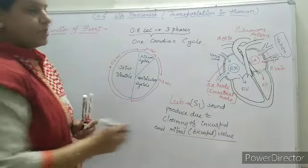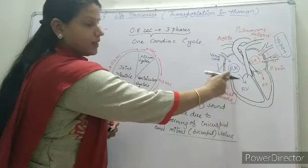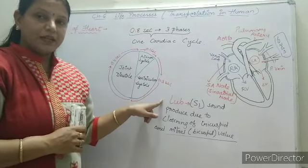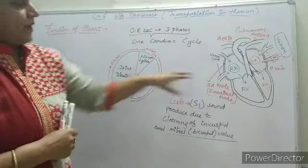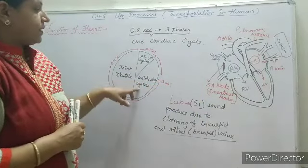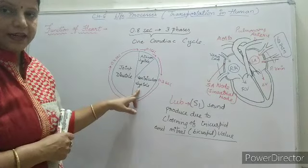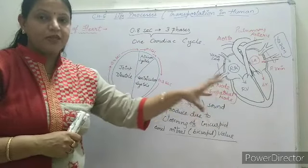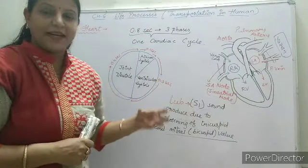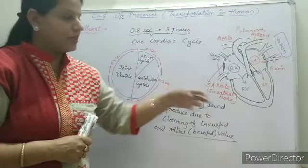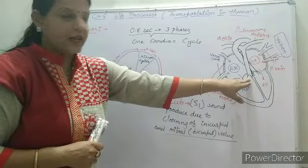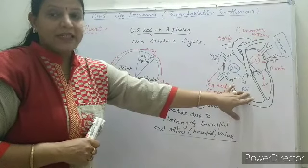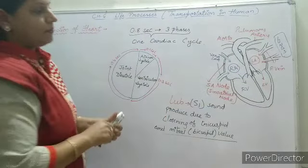The tricuspid and bicuspid valves are situated between the atrium and ventricle. Due to the closing of these valves, a sound is produced that is known as the lub sound. Then the third phase — ventricular systole — occurs, in which the walls of the ventricles start contracting and create pressure inside the blood volume, pushing blood into the pulmonary artery as well as into the systemic aorta. The right ventricle pours deoxygenated blood into the pulmonary artery.